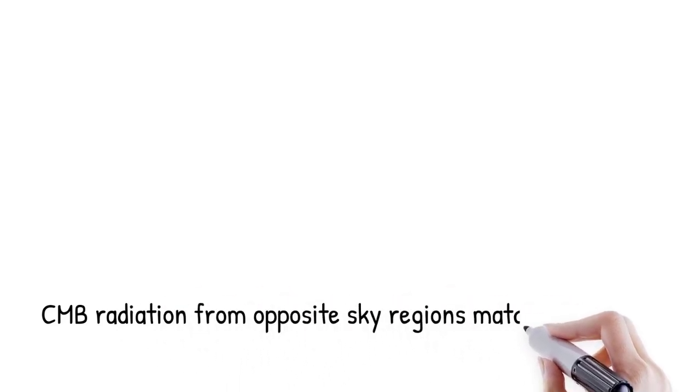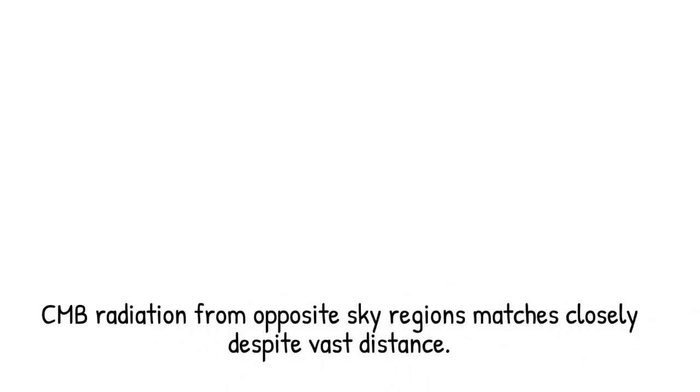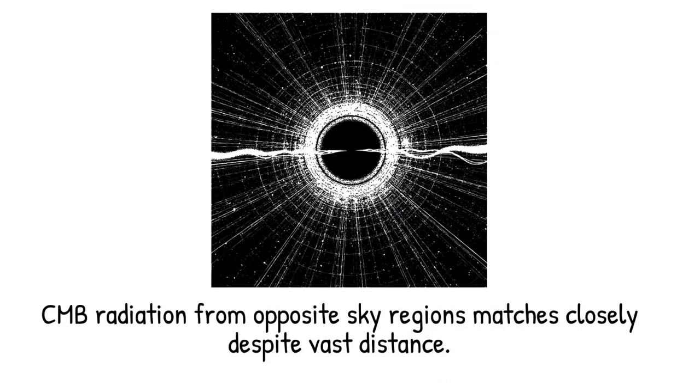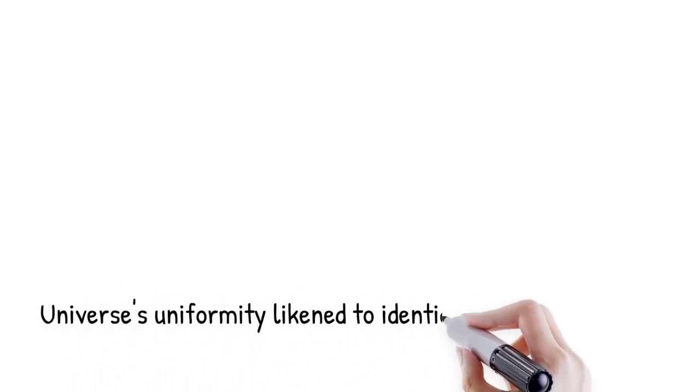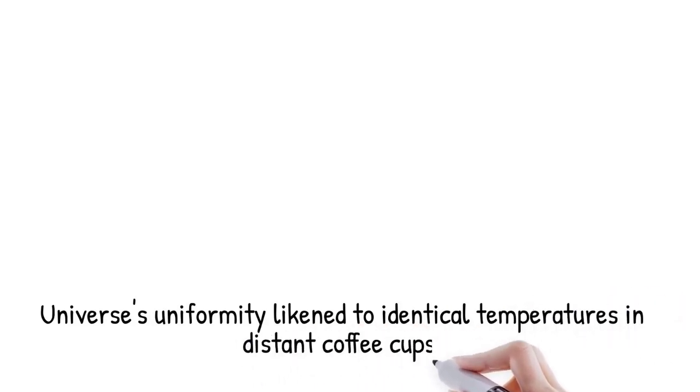Example: the CMB radiation from opposite sides of the sky has nearly identical temperatures, despite being over 90 billion light years apart. Analogy: It's like finding two cups of coffee across the galaxy at exactly the same temperature, even though they've never touched or exchanged heat.